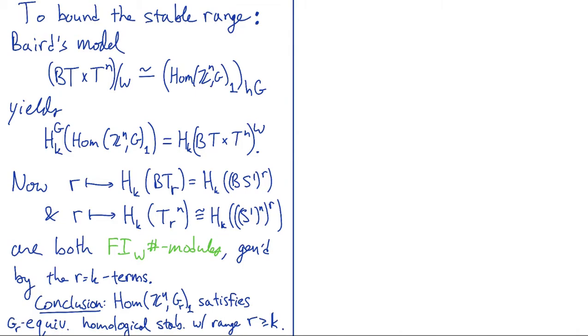So we use this other model, again, due to Baird that I mentioned before, for the homotopy orbit space of these spaces of commuting n-tuples. So the model is this product of the classifying space of the torus with power of the torus, modulo the Weyl group. And so this is telling you that the equivariant homology of these spaces looks like the Weyl group invariants of this product.